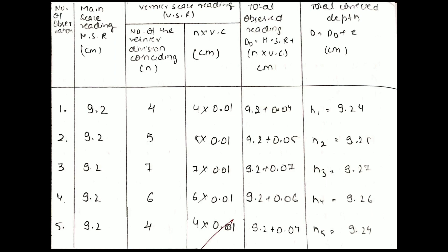Then the vernier divisions coinciding were 4, 5, 7, 6, and again 4. Then by calculation I got five various heights because I took the reading five times. It is important that the number of readings for the height and the diameter of the beaker both should be the same.